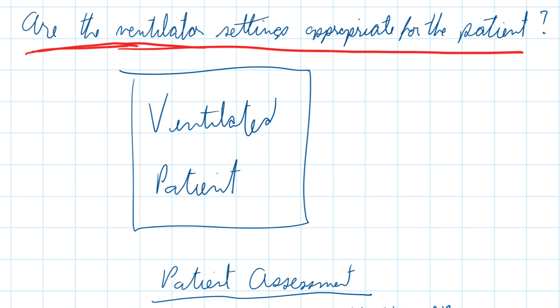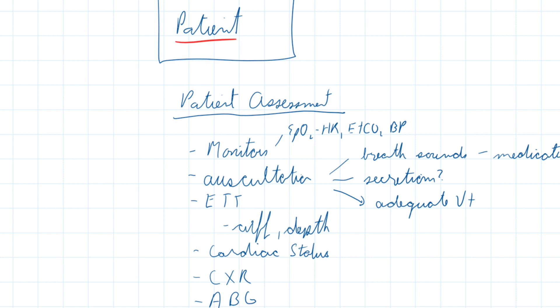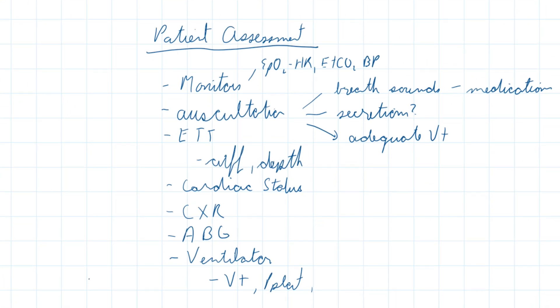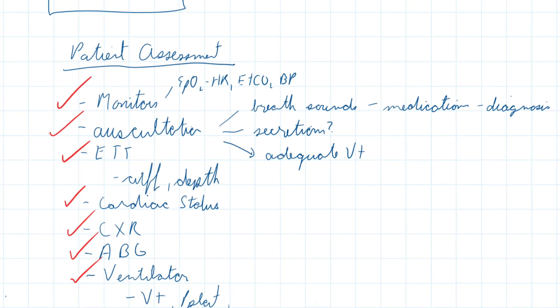So we've got our patient on a ventilator and we're trying to make and interpret all those different data. Now I know you've gone through this in patient assessment, you've looked at the monitors, you've auscultated, you've done your endotracheal tube check, you looked at the cardiac status, the chest x-ray, the blood gas and the ventilator and what I'm going to try to do is give you a mechanism by creating these algorithms on how to interpret all this different information.